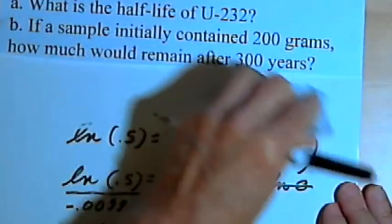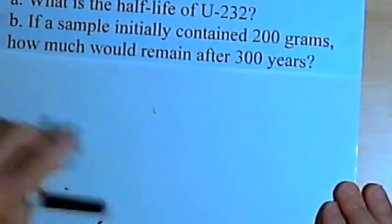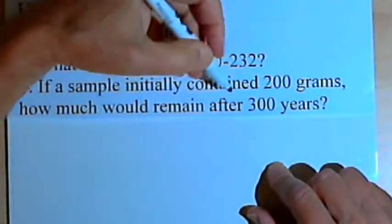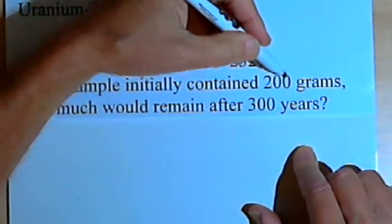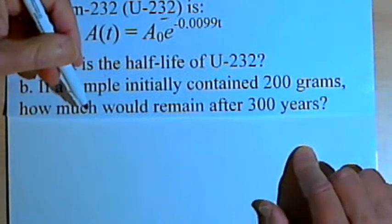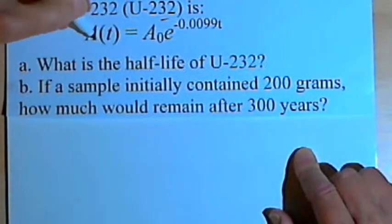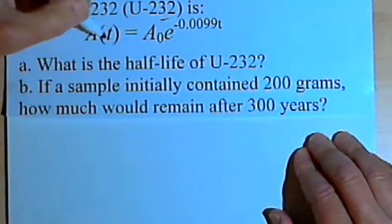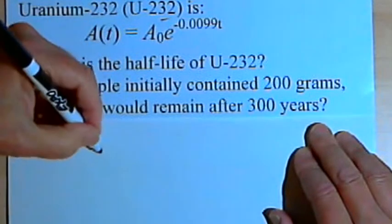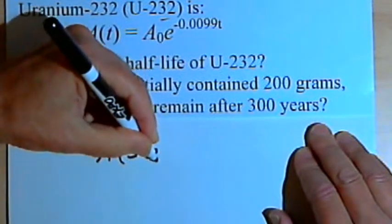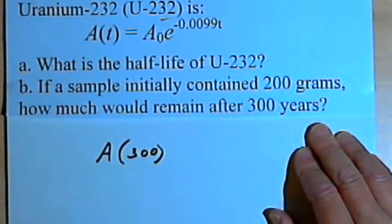There's a second part to this problem. The second part says if a sample initially contained 200 grams, how much would remain after 300 years? So let's go back to this formula. A(t), t stands for time, so I want the amount A of 300, the amount after 300 years.